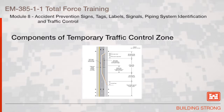The activity area has two components. The first is the buffer space, which is longitudinal with the traffic and provides protection for both traffic and the workers. The next area is the workspace, which is set aside for worker equipment and material storage. After the workspace is the termination area, which lets traffic return to its normal operations.